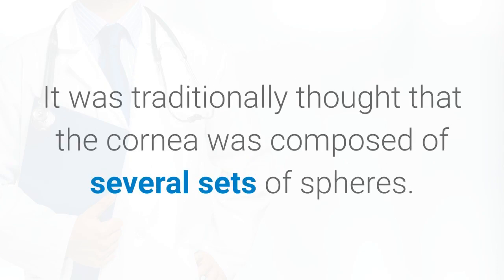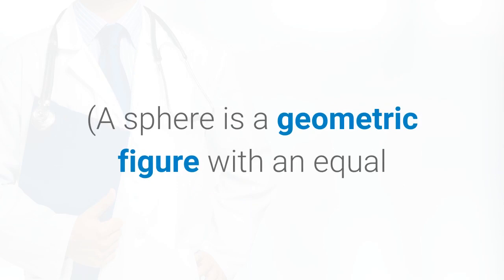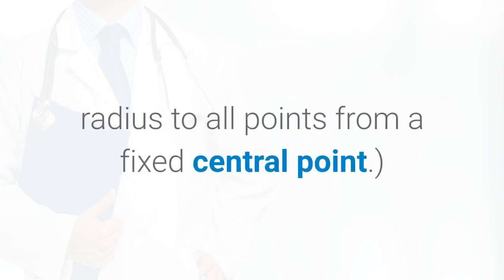It was traditionally thought that the cornea was composed of several sets of spheres. A sphere is a geometric figure with an equal radius to all points from a fixed central point.